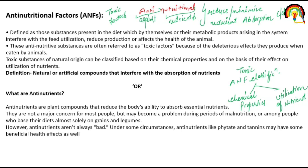These are called anti-nutritional factors. In another words, anti-nutrients are plant compounds — natural in origin — that reduce the body's ability to absorb essential nutrients. Essential nutrients are those which the body cannot synthesize and must be consumed through the diet. Anti-nutrients reduce the absorption of these essential nutrients.